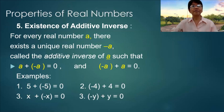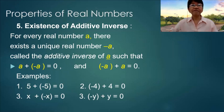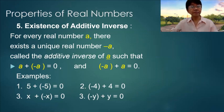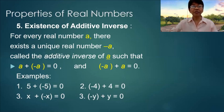Number five: Existence of the Additive Inverse. For every real number a, there exists a unique real number, the negative of a, called the additive inverse of a, such that a plus negative a is equal to 0, and negative a plus a is equal to 0. So if you add two numbers with opposite signs, the result will be equal to 0.